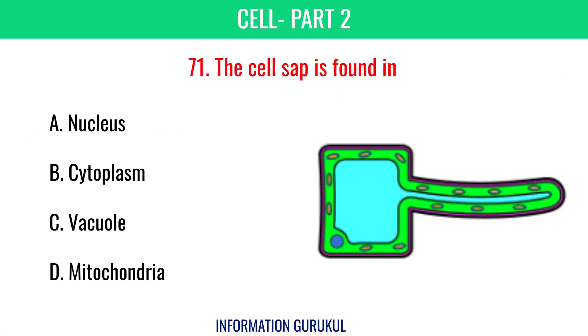The cell sap is found inside the vacuole.